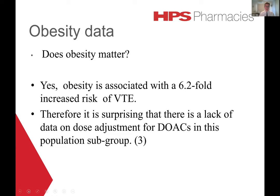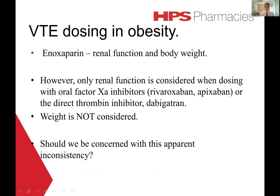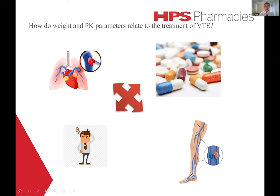It is surprising that there is a lack of data on dose adjustments for DOACs in this population subgroup. There is also an apparent lack of consistency between injectable and oral dosing of anticoagulants. When we dose a VTE drug such as enoxaparin, two physiological factors are assessed: renal function and body weight. However, only renal function is considered when dosing with oral factor Xa inhibitors such as rivaroxaban, apixaban, or the direct thrombin inhibitor dabigatran. Weight is not considered. Should we be concerned about this apparent lack of consistency?